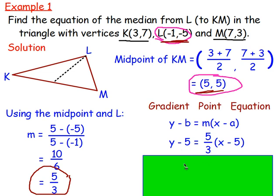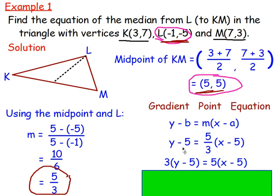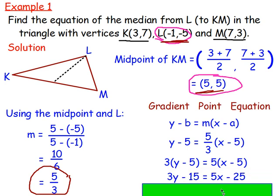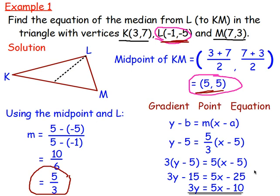To clear the fraction, multiply both sides by 3: 3(y minus 5) equals 5(x minus 5). Expanding: 3y minus 15 equals 5x minus 25. Adding 15 to both sides gives 3y equals 5x minus 10. That's your answer. You could divide through by 3 to get y equals 5 thirds x minus 10 over 3, or rearrange — any correct equivalent form is acceptable.